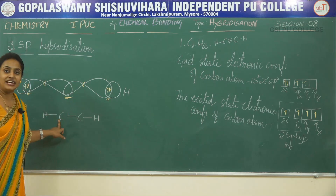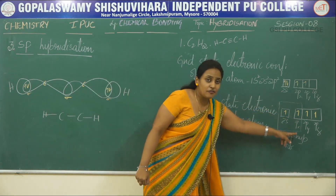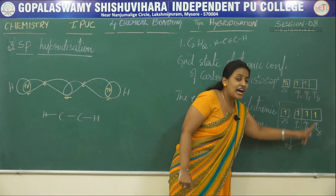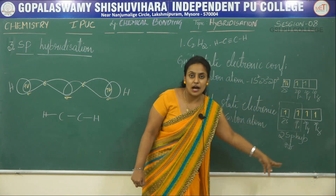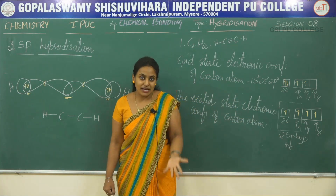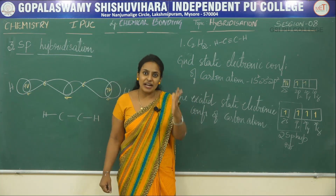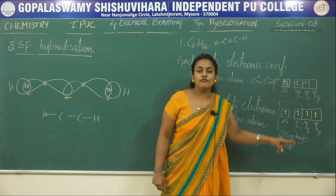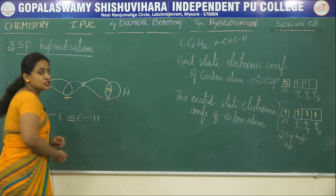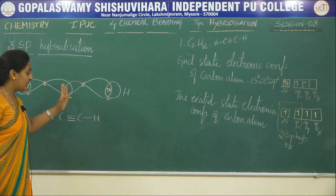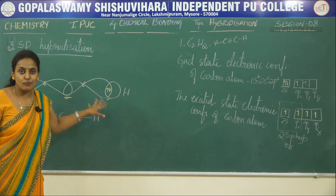The carbon valency has not yet been satisfied. There are two unhybridized orbitals on each carbon atom. These two unhybridized orbitals overlap in a sideways manner, and since sideways overlap leads to pi bond formation, two pi bonds are formed between the two carbon atoms. This is the structure and hybridization scheme of the ethyne molecule.